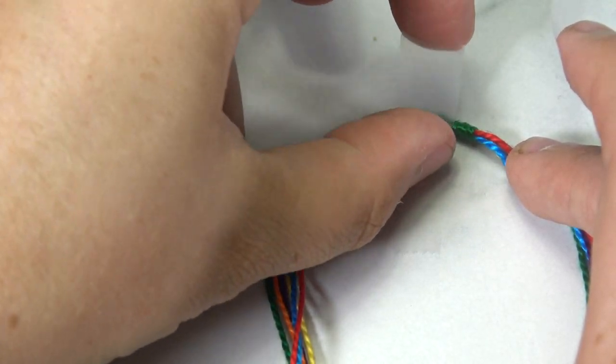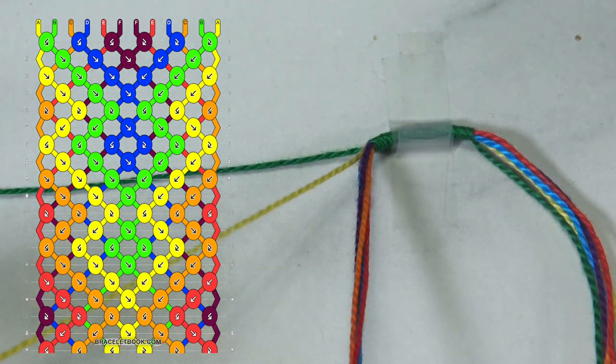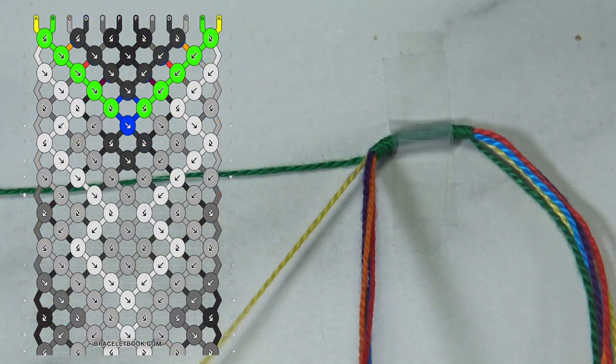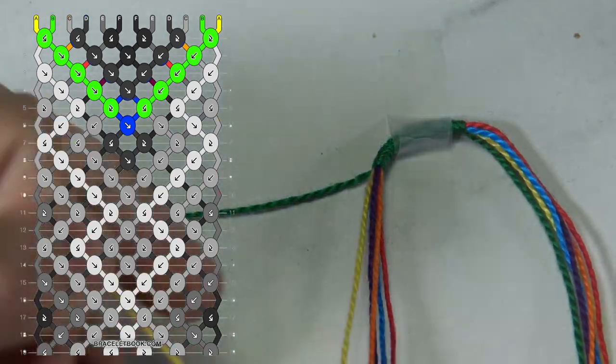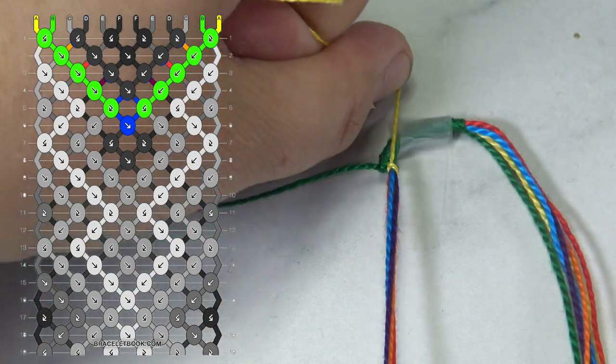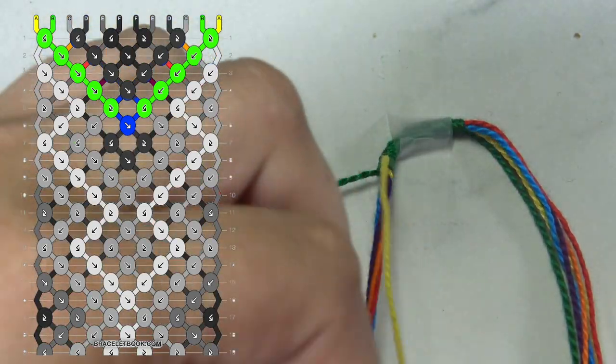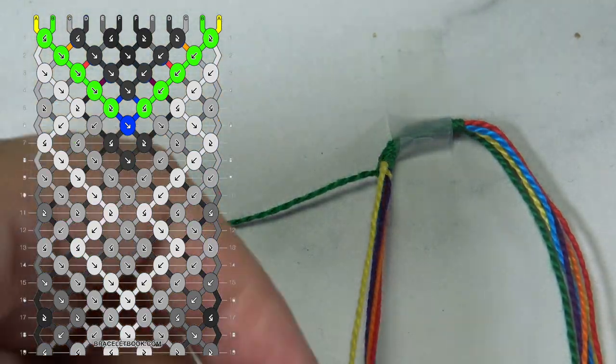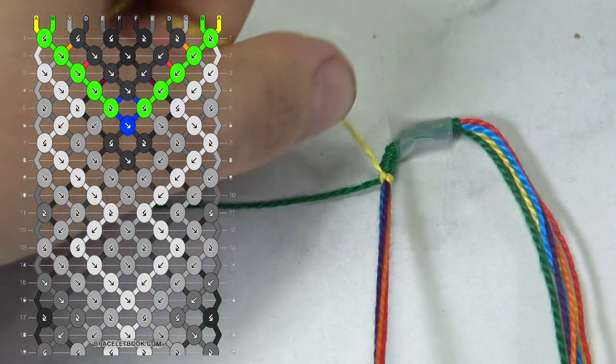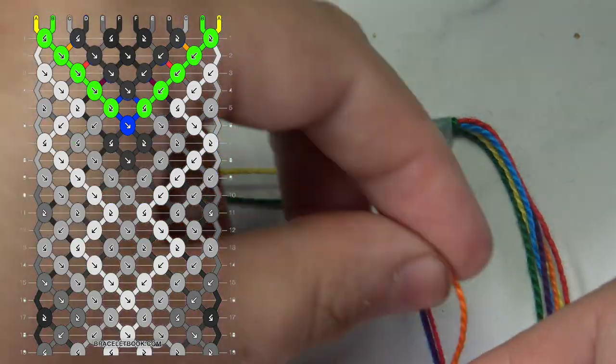Tape the green loop to the table and now the fun starts. This is my design I am following look closely at the little threads. We have green yellow orange red purple and blue go in that exact order.